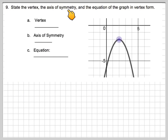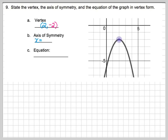The last question asks you to state the vertex, axis of symmetry, and equation of the graph in vertex form. The vertex is at (2, −2). The axis of symmetry is always the x value written as a line: x = 2. For the equation, beginning with the end in mind, it's y = (x − 2)² − 2.